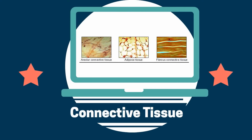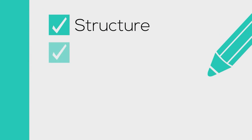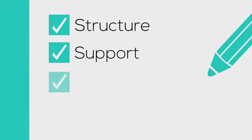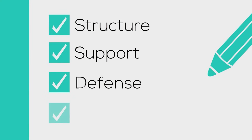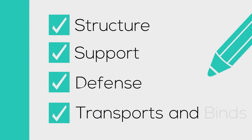Connective tissue is one of the four types of tissues found in our body. Connective tissue helps provide structure, support, defense, transport materials, and binds things together.